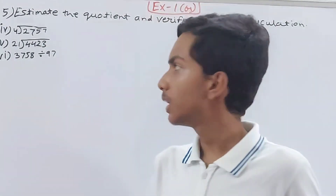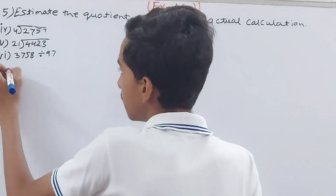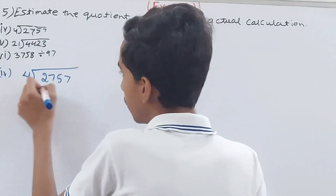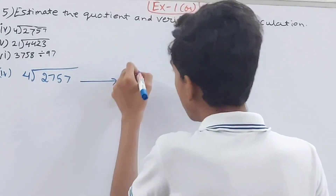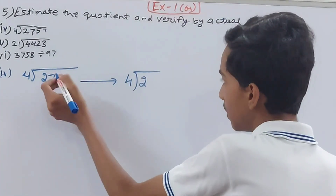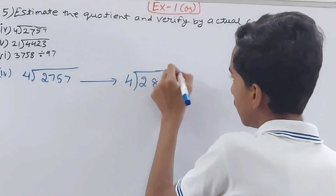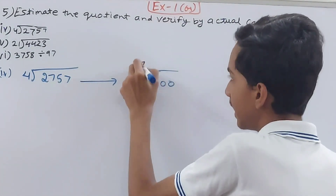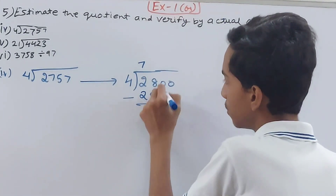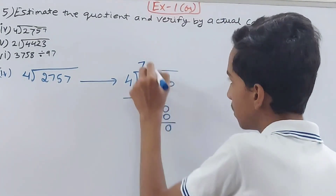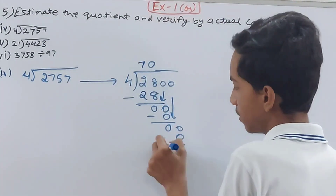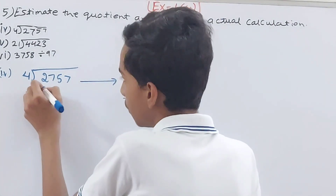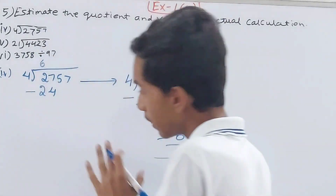Fourth part: 2757 ÷ 4. Estimate 2757 to the nearest hundred gives 2800. So estimated is 2800 ÷ 4. For the estimated: 4 into 28 is 7, bring down 0, minus 0, bring down 0, minus 0 — estimated quotient is 700.